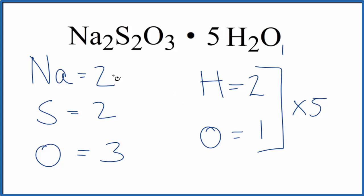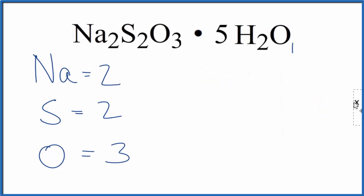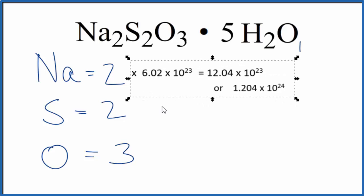be asked to figure out how many atoms of, say, sodium there are in one mole of this sodium thiosulfate pentahydrate. So the way we do that is we'll multiply the two times Avogadro's number. So two times Avogadro's number